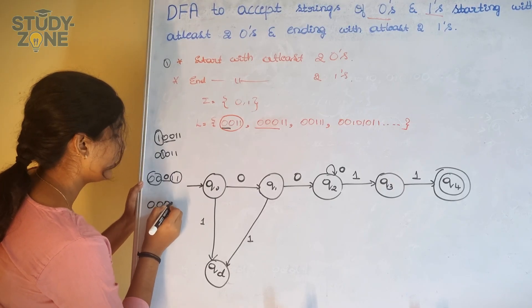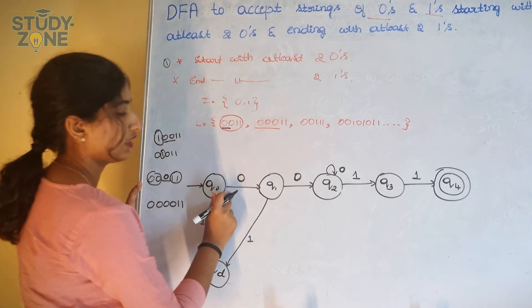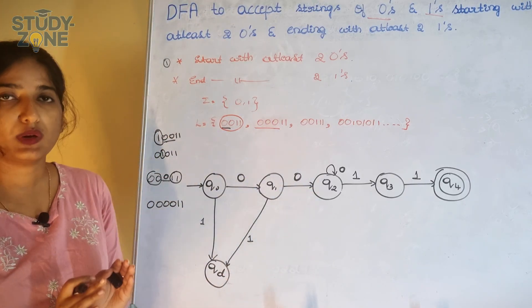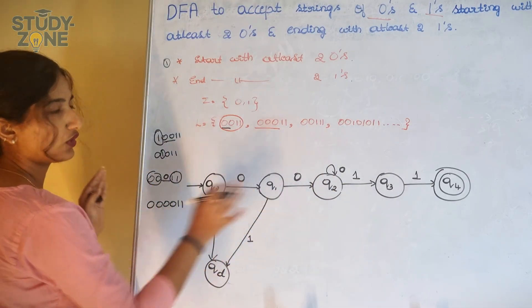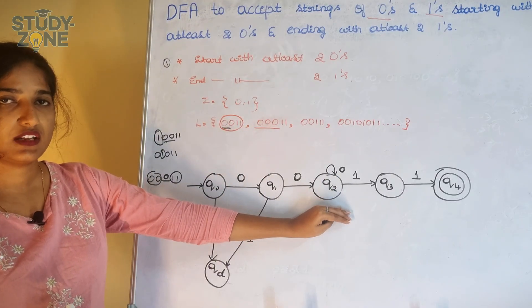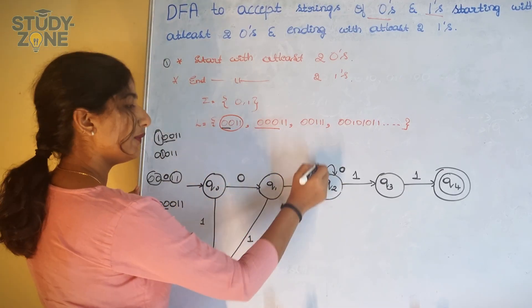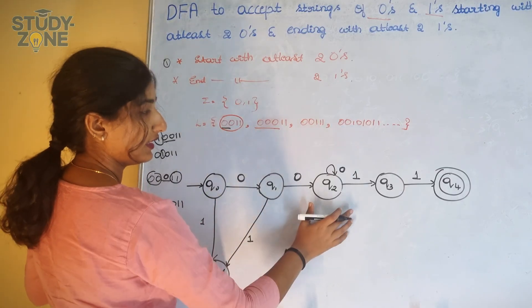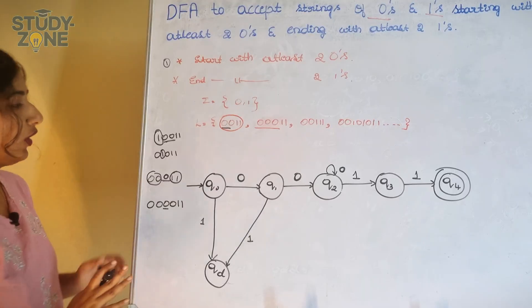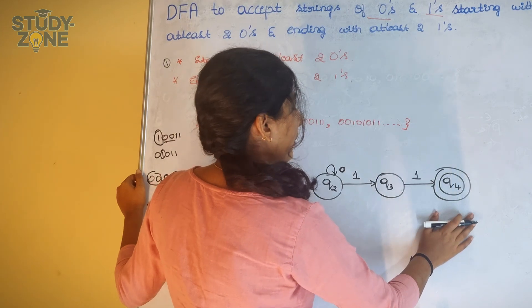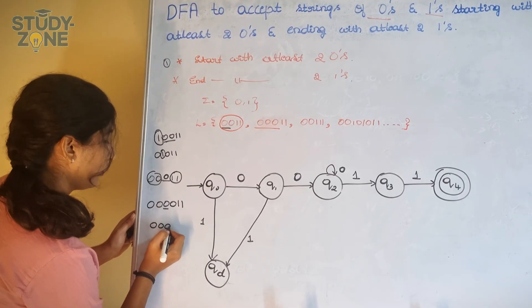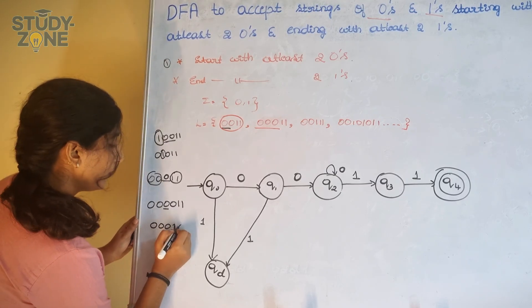For example, with input zero zero zero zero zero one one: q0 on zero moves to q1, q1 on zero moves to q2, then q2 on zero stays in q2, and again q2 on zero stays in q2. Now I get one and move to q3, then one again and move to q4. So q2 on zero stays in q2, waiting until a one appears. q2 on one moves to q3.